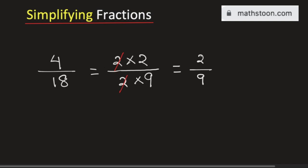Now there is no number which can divide both 2 and 9 other than 1. So 2 divided by 9 is the simplified form of the fraction 4 divided by 18.